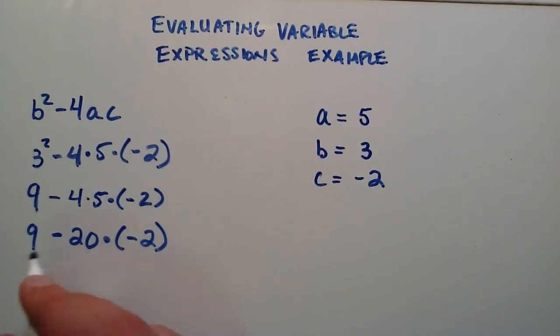Finishing up the multiplication here, we're left with 9 minus 20 times negative 2. Now 20 times a positive 2 gives us 40, which means that 20 times negative 2 gives us negative 40.